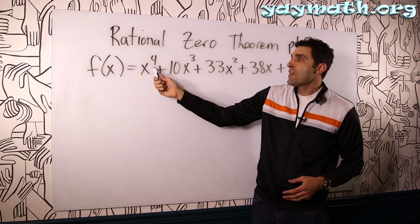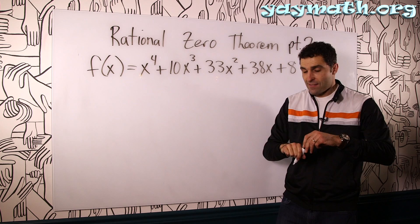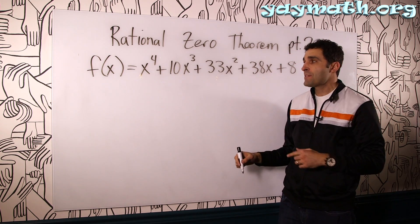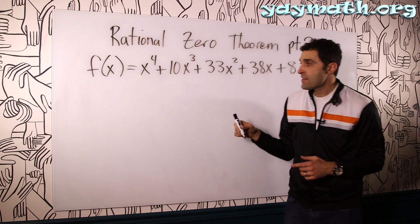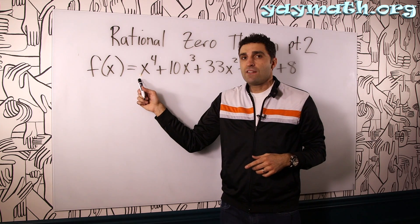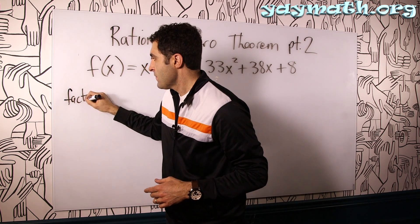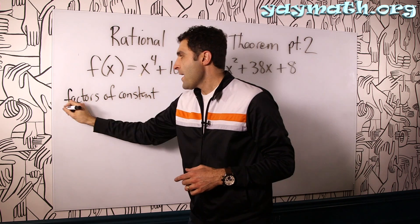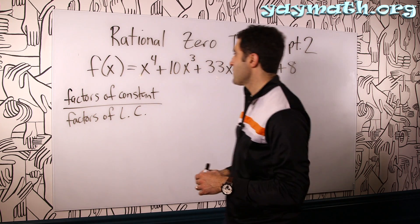As we said, yes, fourth degree, so four solutions hiding inside here. The first thing that we can do, since this is part of the rational zero section, is we can come up with the list of potential solutions for this polynomial. The list of potential solutions is all the factors of the constant divided by all the factors of the leading coefficient. Let's write that down. Factors of constant divided by factors of leading coefficient.